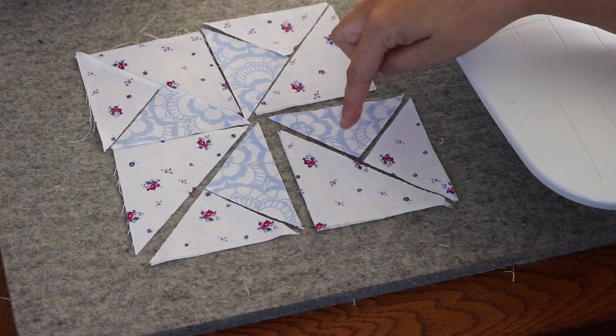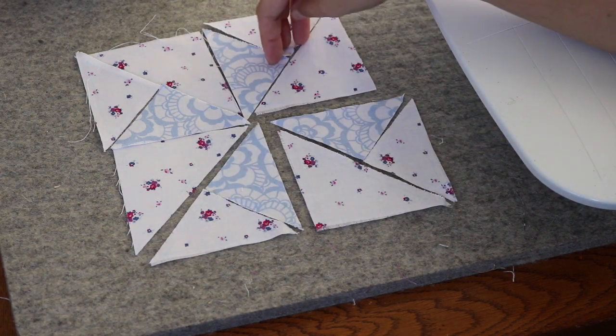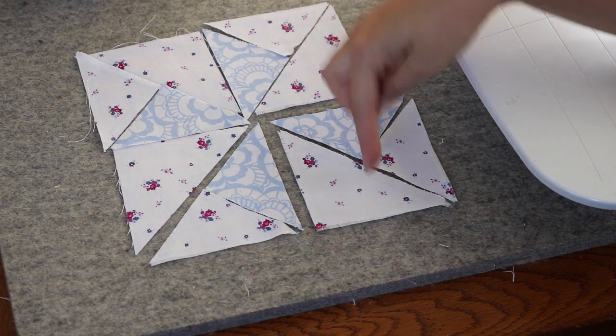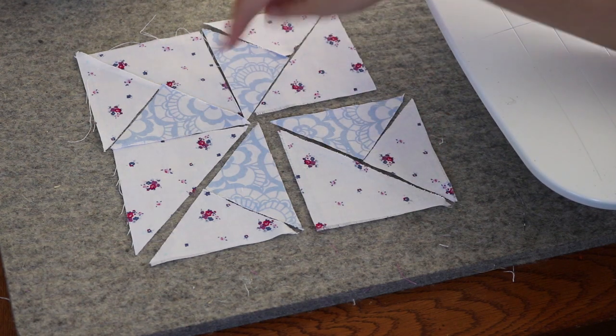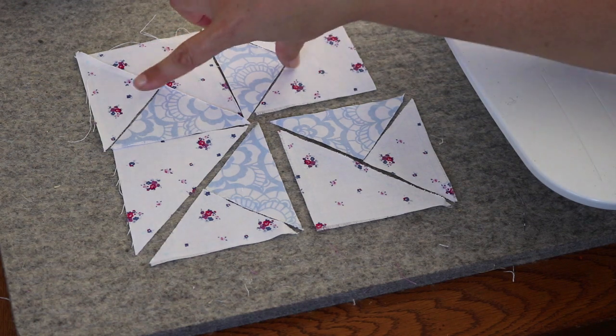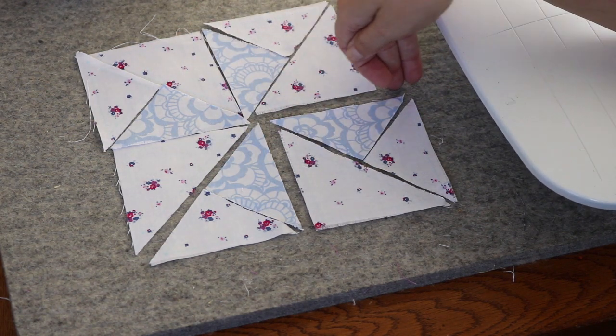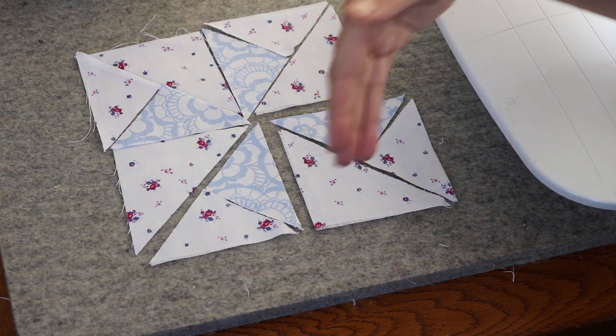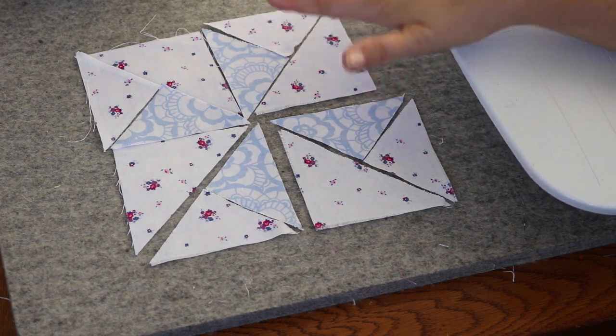The way we're going to make this is start by making all of our halves of our quarter square triangle units and then we'll press those. Then we'll stitch it to the other half to make a square and we'll do that four times. Then we take the top two and the bottom two and stitch them together to make two rows. Then we stitch all the way across the middle to put our two rows together and then our block will be complete. So this is yet another simple block to put together.